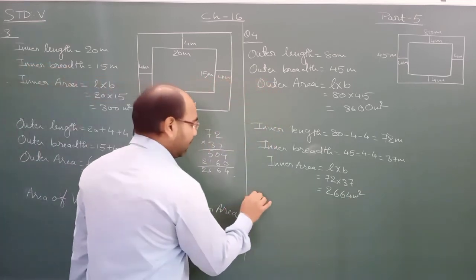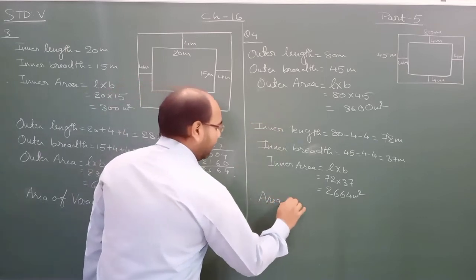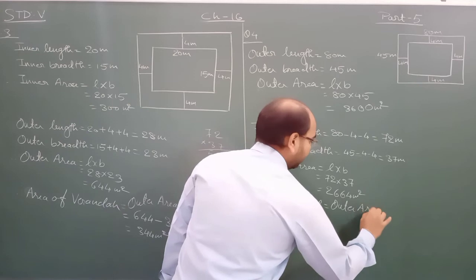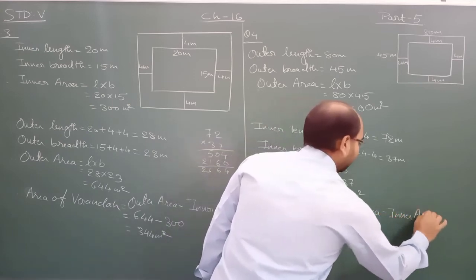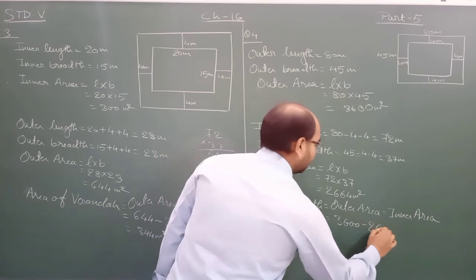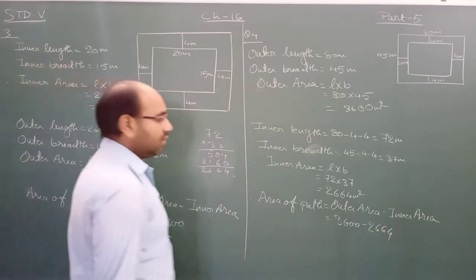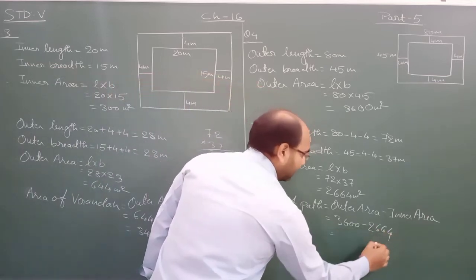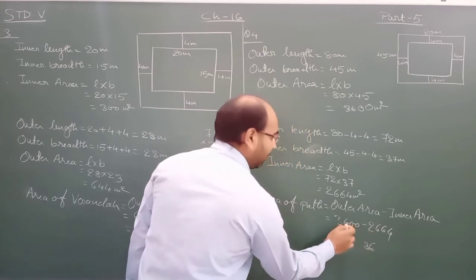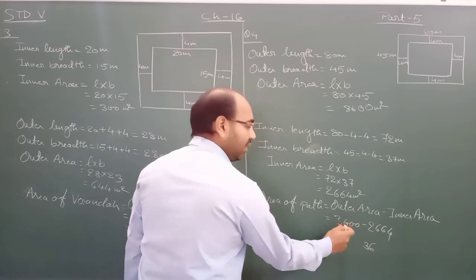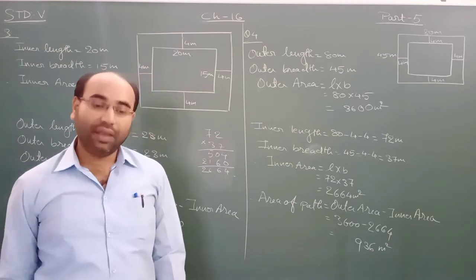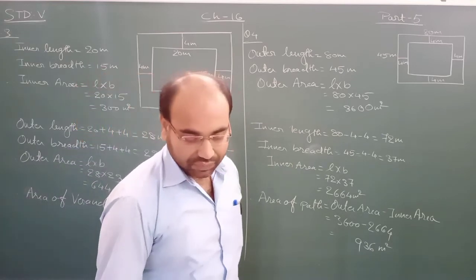Now we find the area of the path. Therefore, area of path is equal to outer area minus inner area, that is 3600 minus 2664, which equals 936 meter square. That is the area of the path.